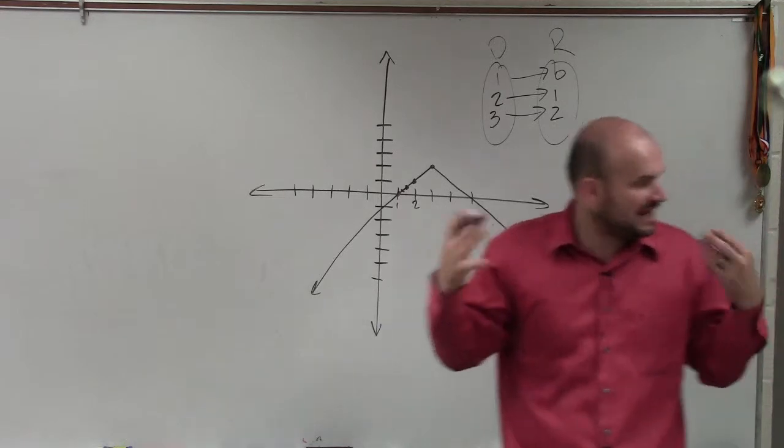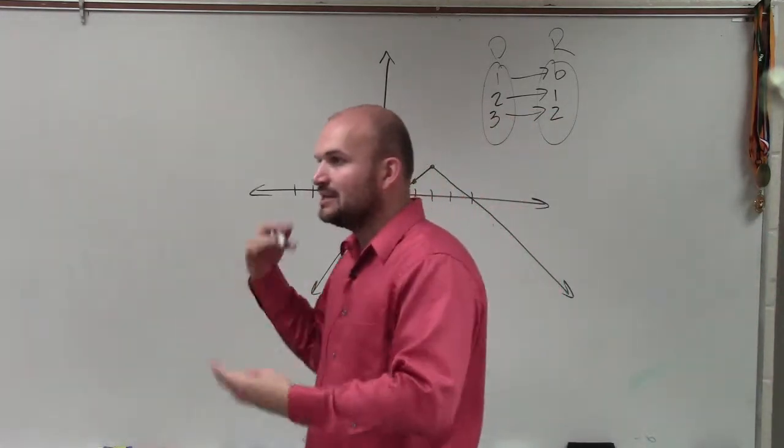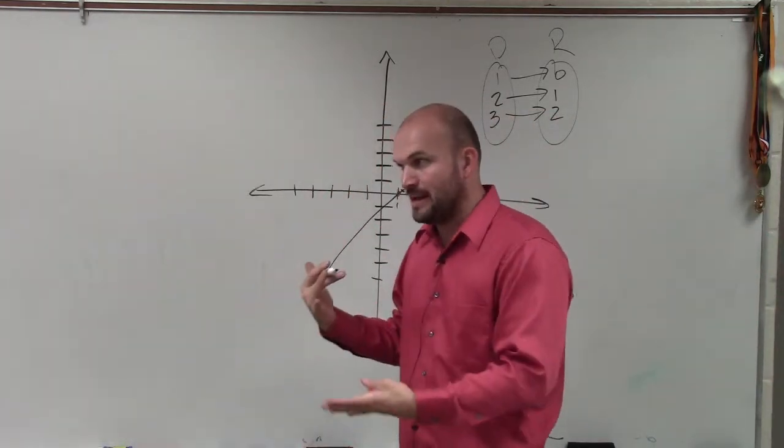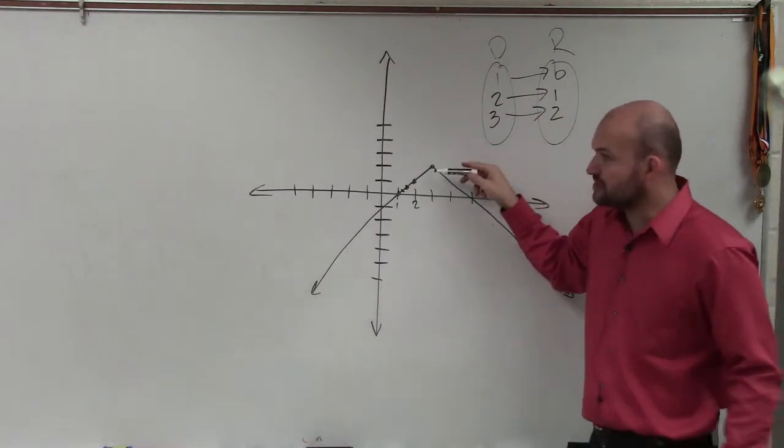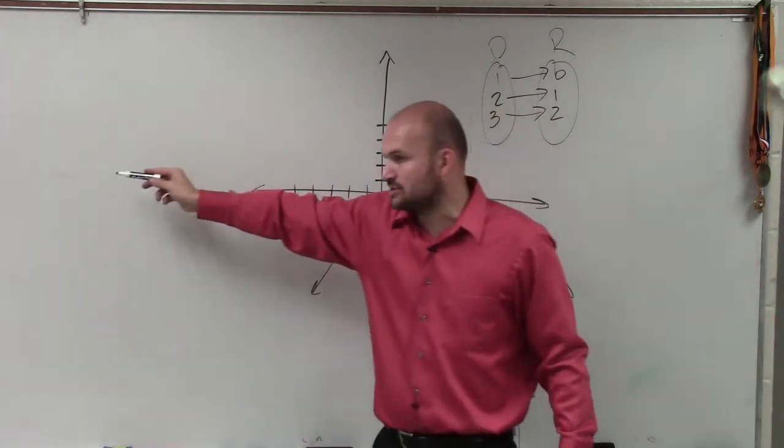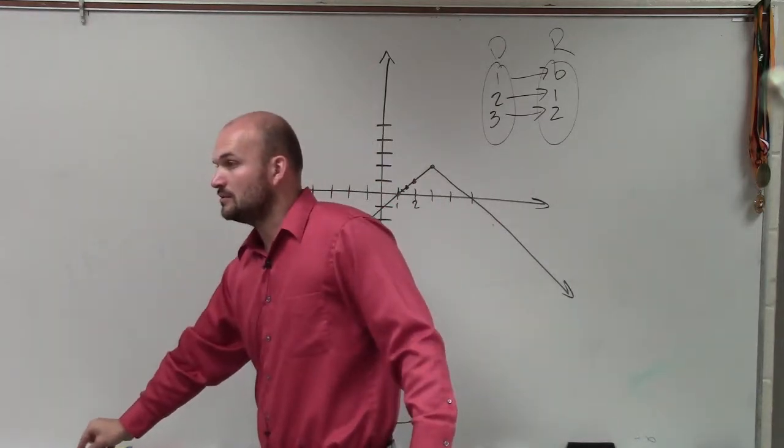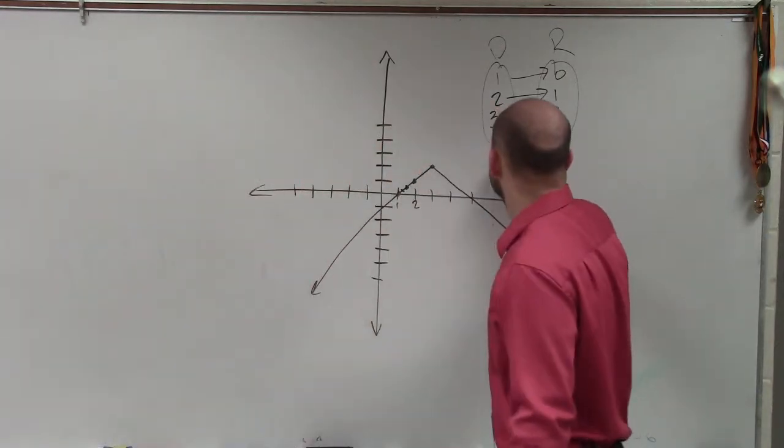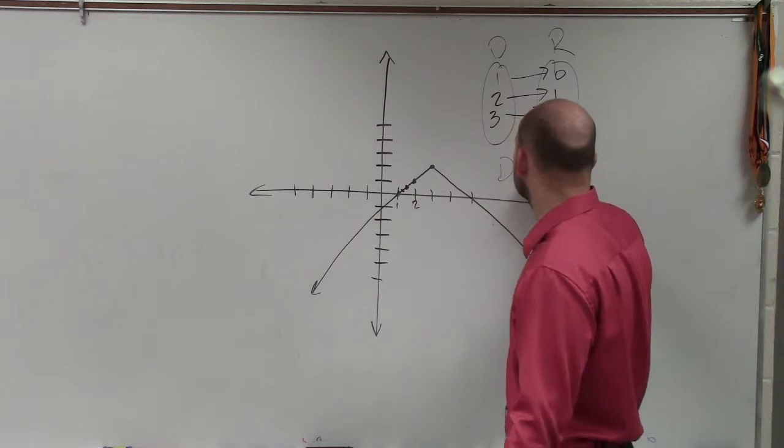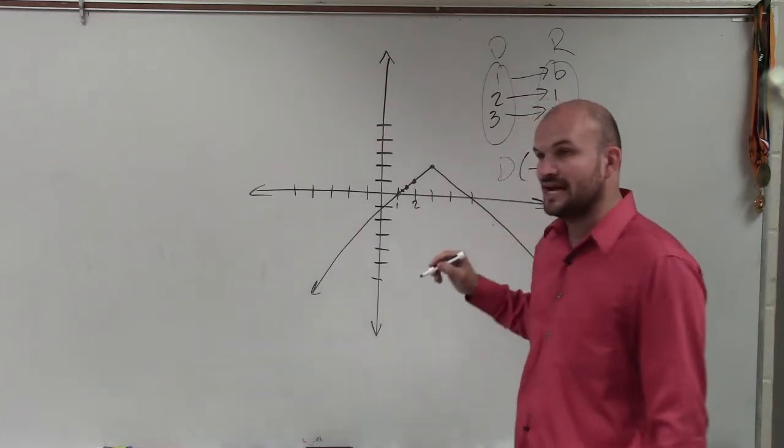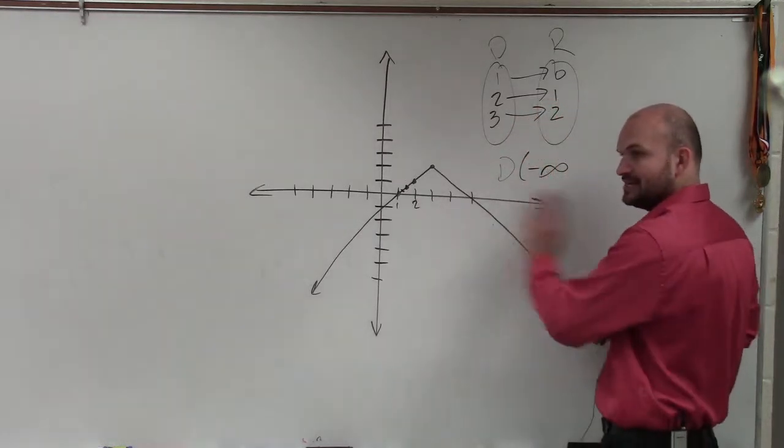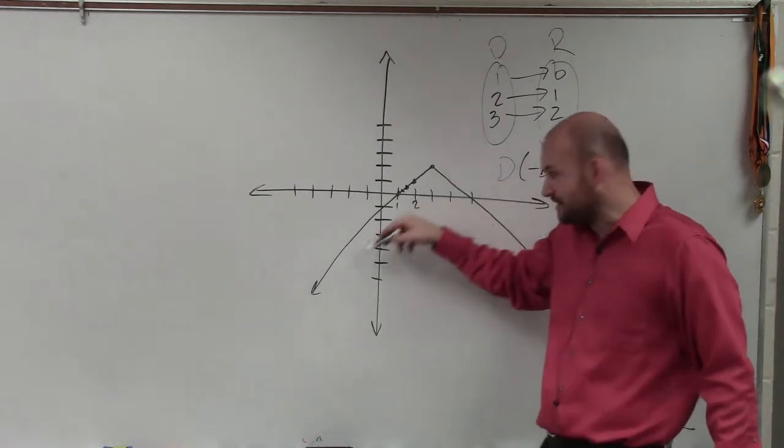So basically, instead of labeling everything that's in the domain, let's label everything that's not in the domain. So is there any restriction on how far this graph is going to go to the left? No. So how far is it going to go? Negative infinity. So we'll say our domain has no restrictions on how far it's going to go in the negative direction. Remember, domain is the set of x values.